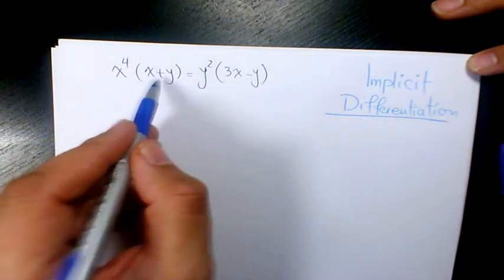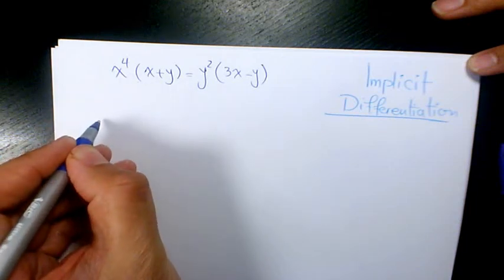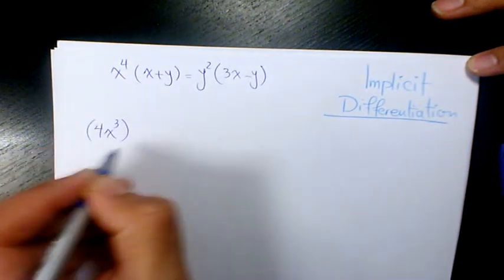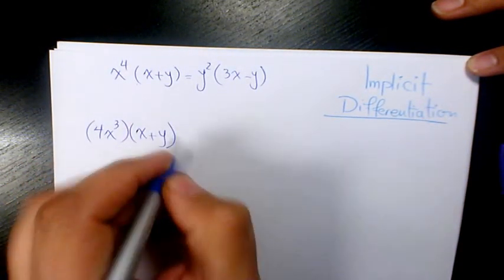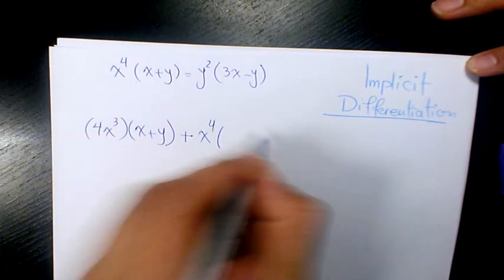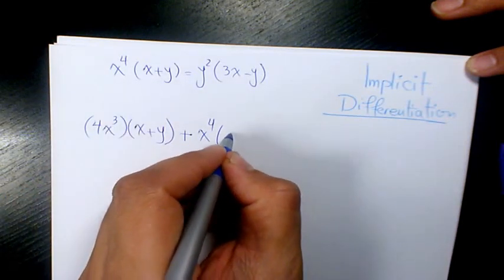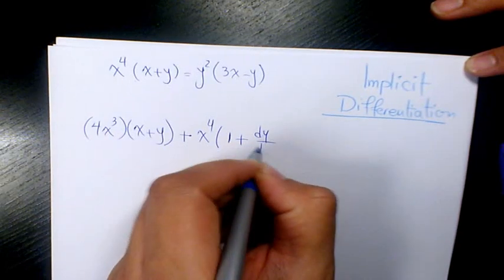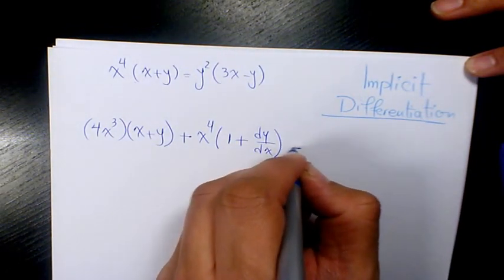First of all, we have product rule here. It's going to be the derivative of x to the power of 4, which will be 4x cubed, times x plus y, plus x to the power of 4 times the derivative of x plus y, which is going to be 1 plus dy over dx, equals to...